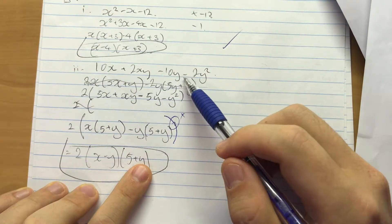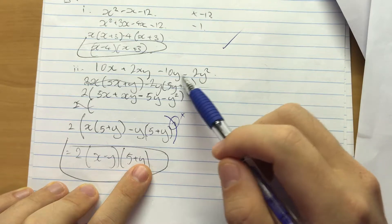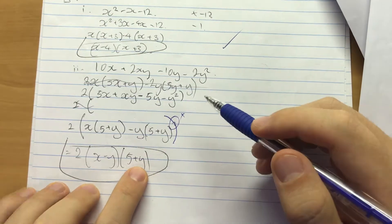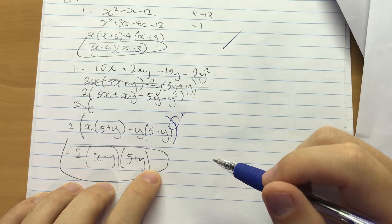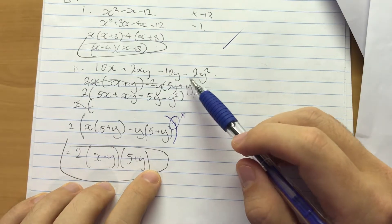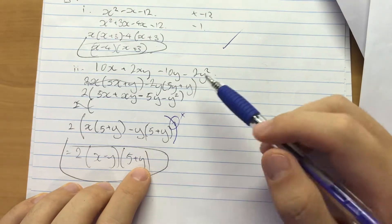Yeah, so the x comes out the front and then you get 10 - 10 is 0. And here you take the y out, yeah, it's also 0. So you get (5+y), yeah it's 0.